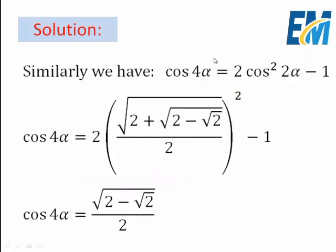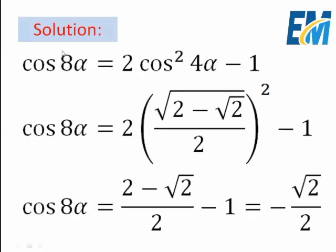Applying the double-angle formula again: cos(4α) = 2cos²(2α) − 1 = 2 × [√(2 + √(2 − √2)) / 2]² − 1. After simplifying this expression, we get cos(4α) = √(2 − √2) / 2, which now has only two nested square roots.